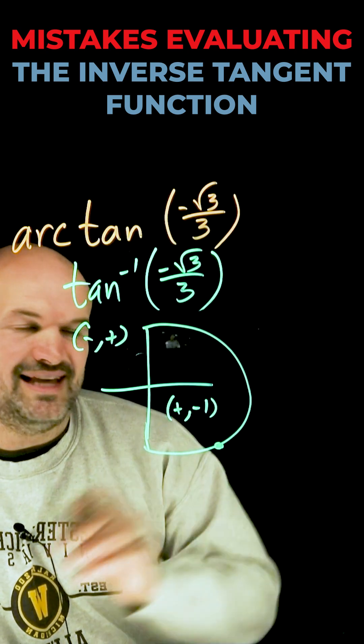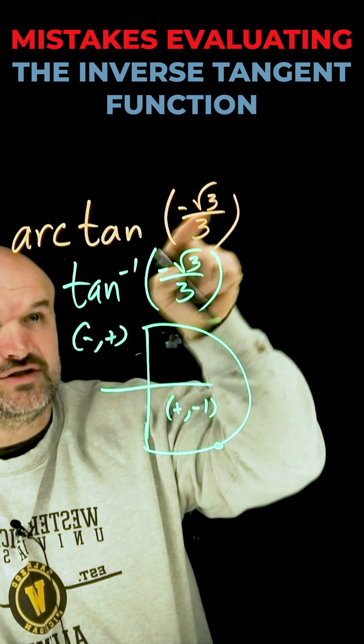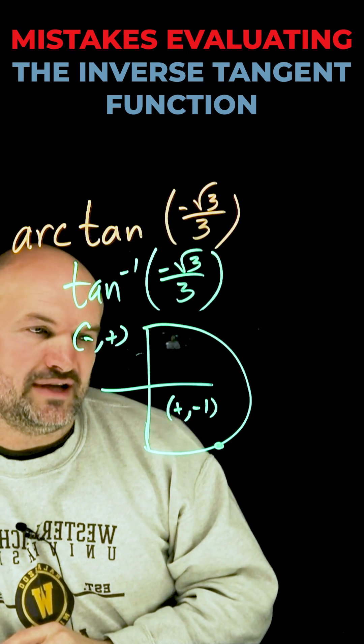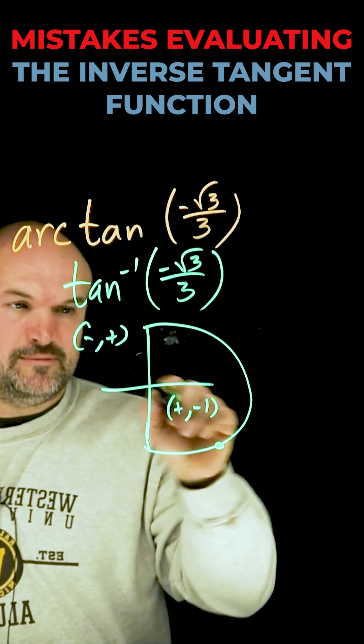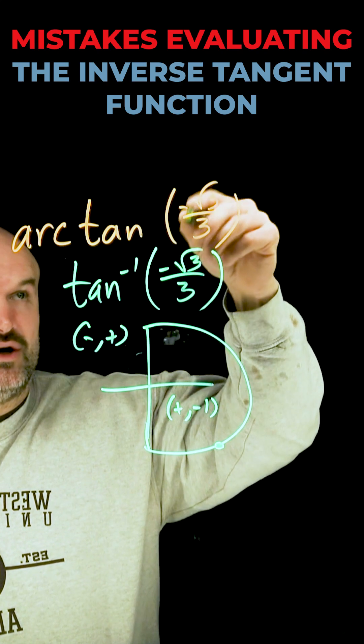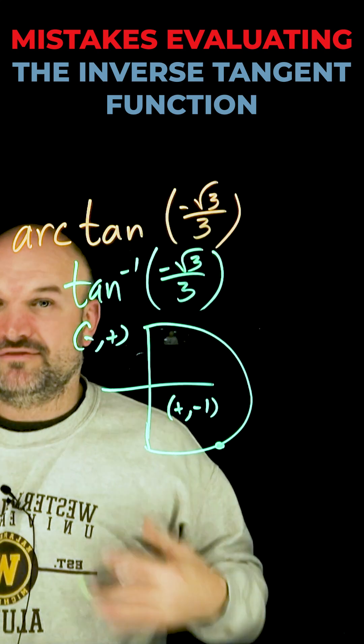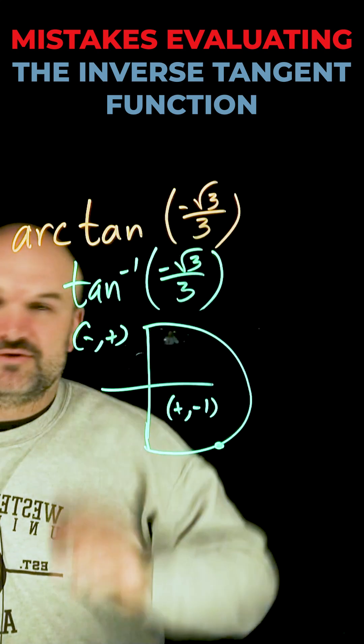So therefore, we're looking for a point that is contained in the fourth quadrant. That is going to be our angle that will be our answer. So now we're going to look at our possible angles that would be in the fourth quadrant that would give us a ratio of negative square root of 3 over 3. And whatever angle produces that, that's going to be our answer.